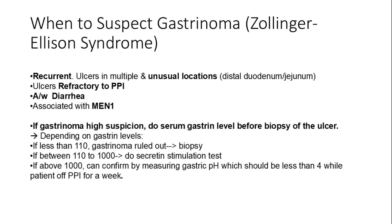Gastrinoma, or Zollinger-Ellison syndrome, should be suspected with recurrent unusual ulcers and diarrhea, especially if refractory to PPIs. It's associated with MEN1. Serum gastrin levels should be checked before ulcer biopsy. If gastrin is less than 110, proceed to biopsy. If between 110 and 1,000, perform a secretin stimulation test. If gastrin is above 1,000, confirm with gastric pH — usually less than 4 when off PPI for at least one week; no biopsy needed.